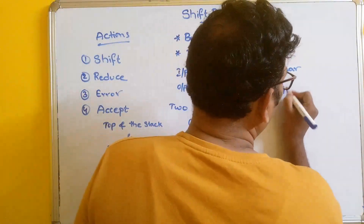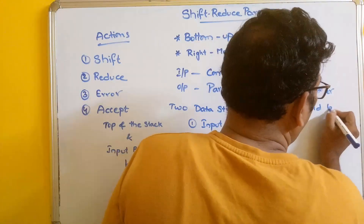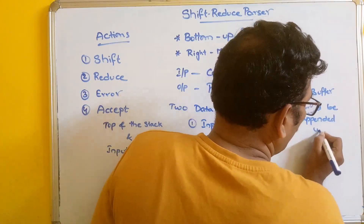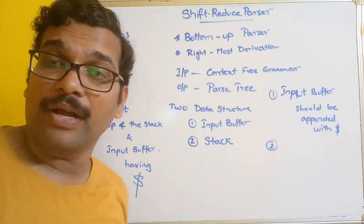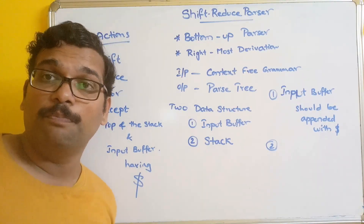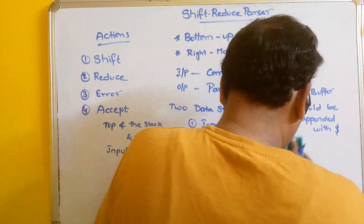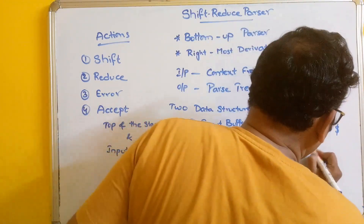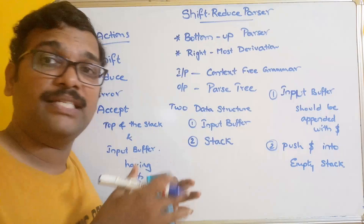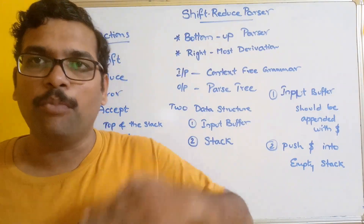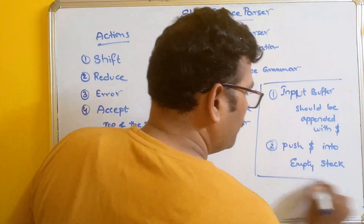Before starting the parsing, two rules must be followed. First, the input string should be appended with a dollar symbol, which specifies the end of the string. Second, push dollar into the empty stack initially — dollar will always be the last (bottom) element in the stack.